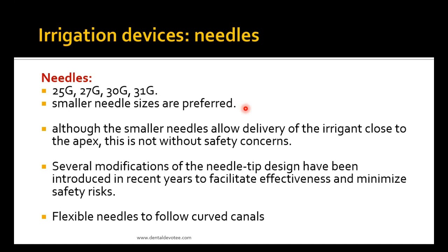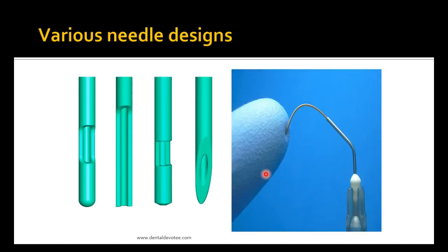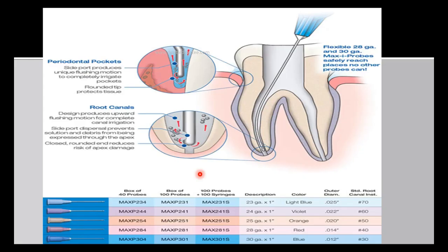Because of chemical reactions between many irrigants, separate syringes should be used for each solution. Needle gauges of 25, 27, 30, and 31 are available — smaller needle sizes are preferred. Although smaller needles allow delivery close to the apex, this is not without safety concerns, as we may accidentally poke the apex. Several modifications of needle tip design have been introduced to facilitate effectiveness and minimize safety risks. Flexible needles also allow following curved canals.